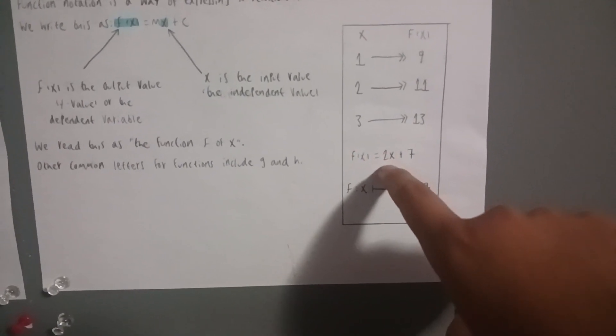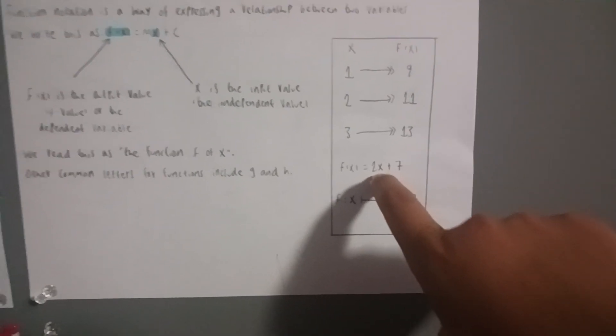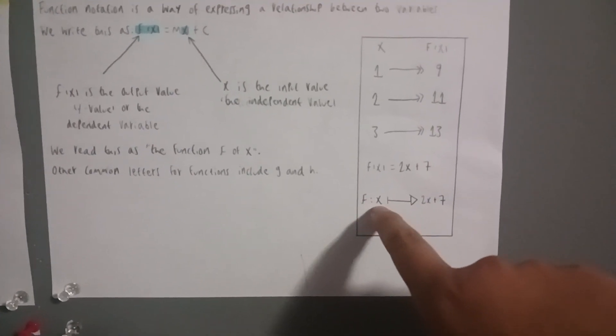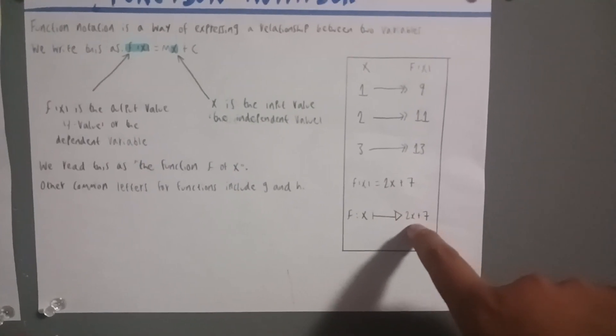f of x is equal to 2x plus seven. And f of x equals 2x plus seven here.